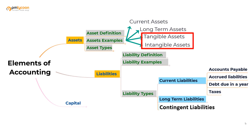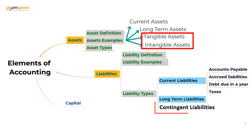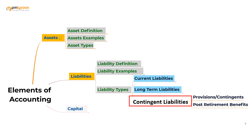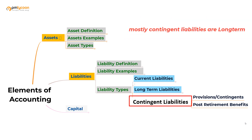Just like we have tangible and intangible assets in the assets category, under the liabilities section we do not have tangible or intangible liabilities. Instead, we have something called contingent liabilities. The important point to remember is that contingent liabilities can be part of current liabilities or long-term liabilities depending on the situation, but most likely they are a long-term liability. Let me explain.